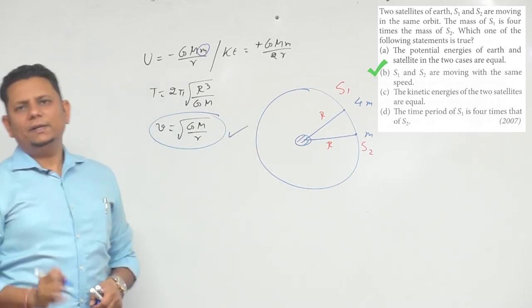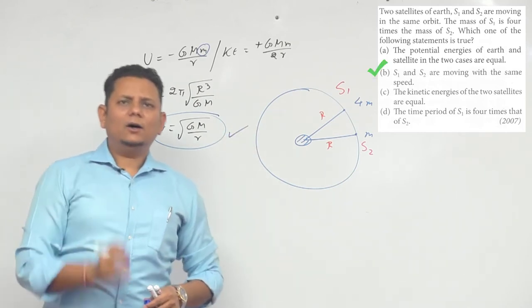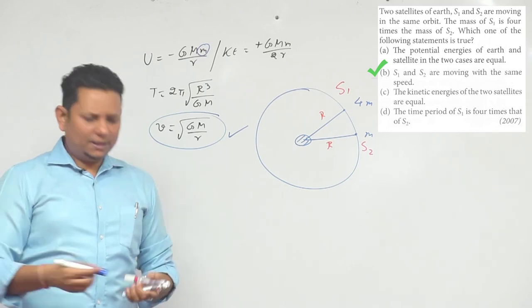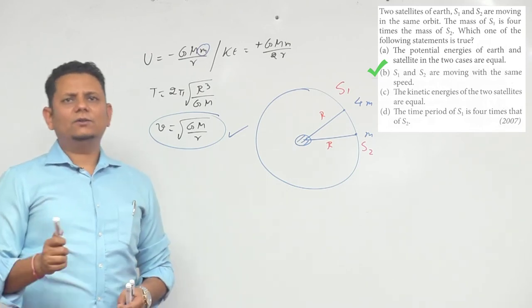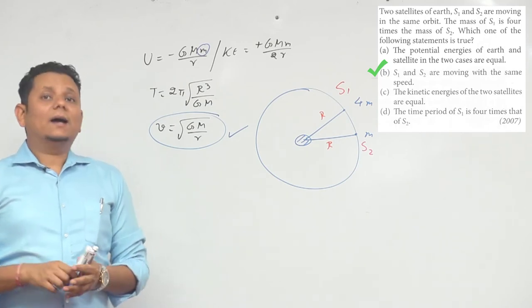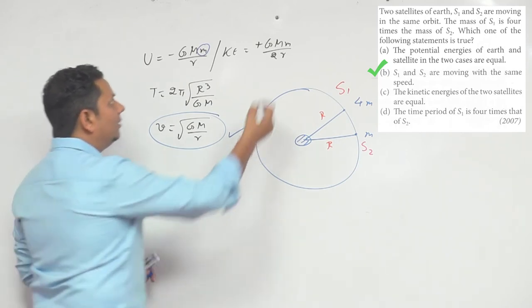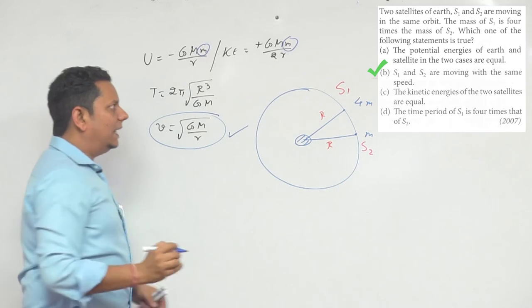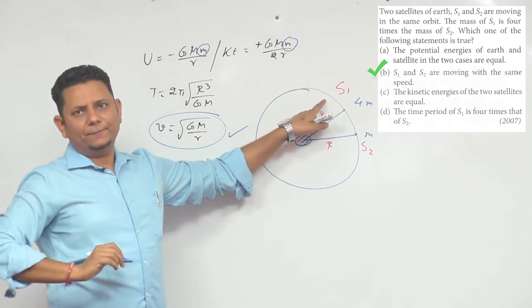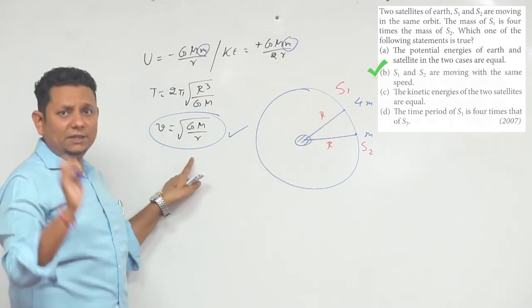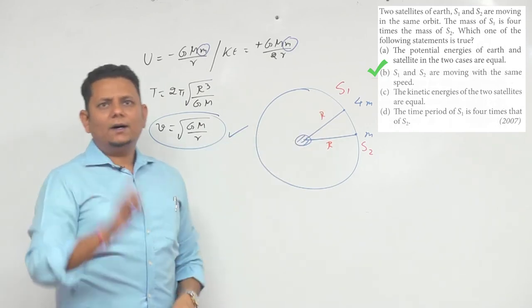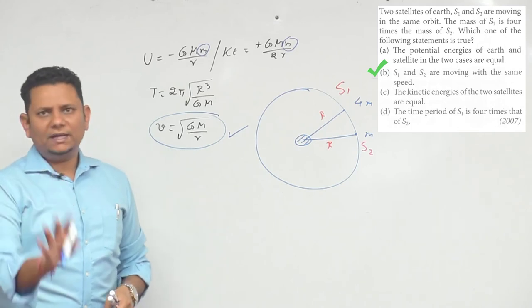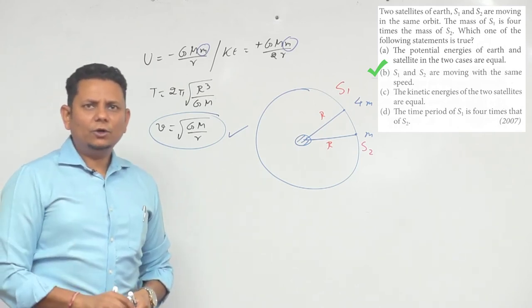Now, option C says kinetic energy of the two satellites will be equal. If kinetic energy is a function of mass, then kinetic energy - if speed is the same but mass is more, then kinetic energy will be four times.